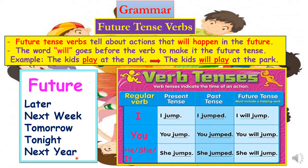Words that show us the verb is in the future tense are: later, next week, tomorrow, tonight, or next year. So let's recall the different tenses of the verbs: present tense, past tense, and future tense.